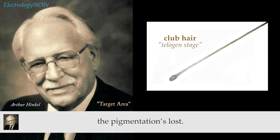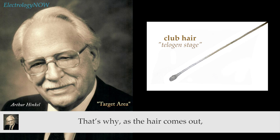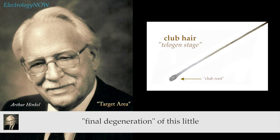At this point, the pigmentation is lost. The pigmentation seems to be lost just about the time that the dermal papilla cells degenerate away from the lower portion of the hair. That's why as the hair comes out and gets up into its final club stage, you have a hair with a club root on it — which is nothing more than the final degeneration of this little broom-like connection.